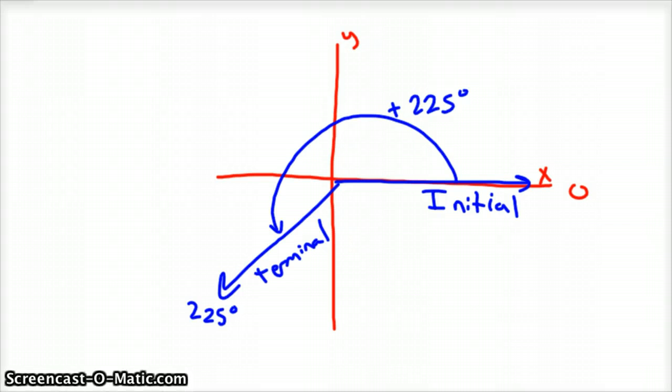And I'll put a little 225 so that we can kind of pay attention to what's going on. So, coterminal basically means this. It means I can keep rotating around the center here, around that point, rotating this ray.